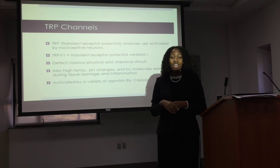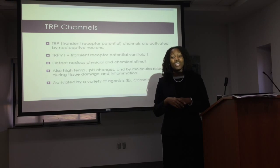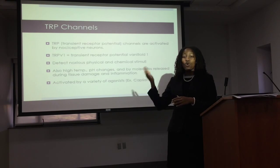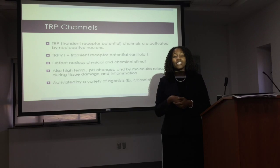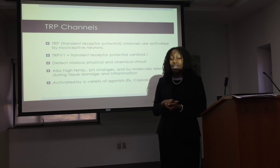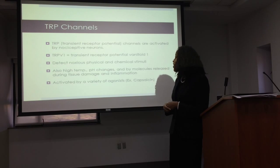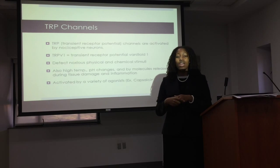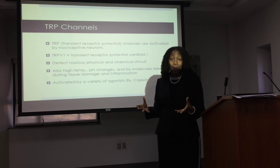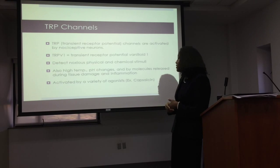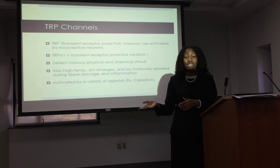TRP V1 is activated by a number of agonists. One example is capsaicin, which is found in a number of peppers — bell peppers specifically is one example.